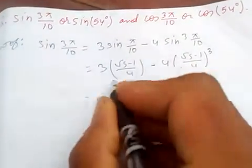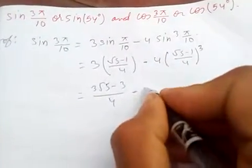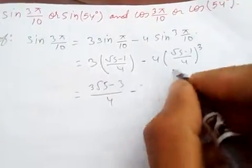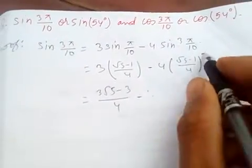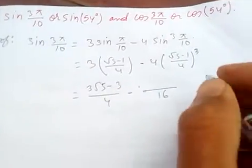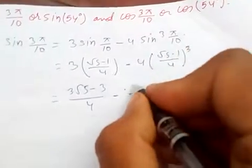This simplifies to (3√5-3)/4 minus... and this cancels, 4 squares left, so this is 16. And this is (a minus b)³ formula, so if you apply this...